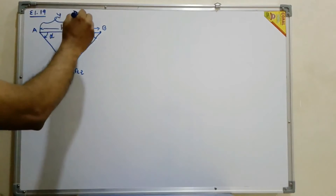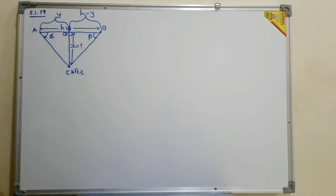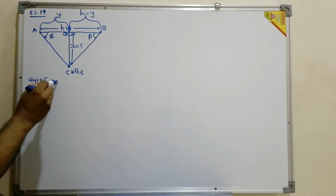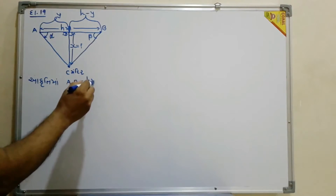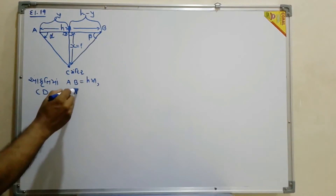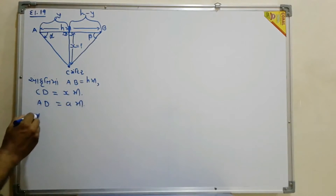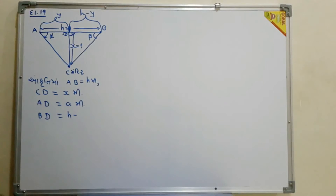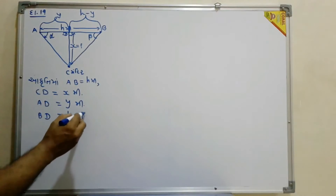AD barabar Y meter. BD barabar H minus Y meter. So AD = Y and BD = H − Y.